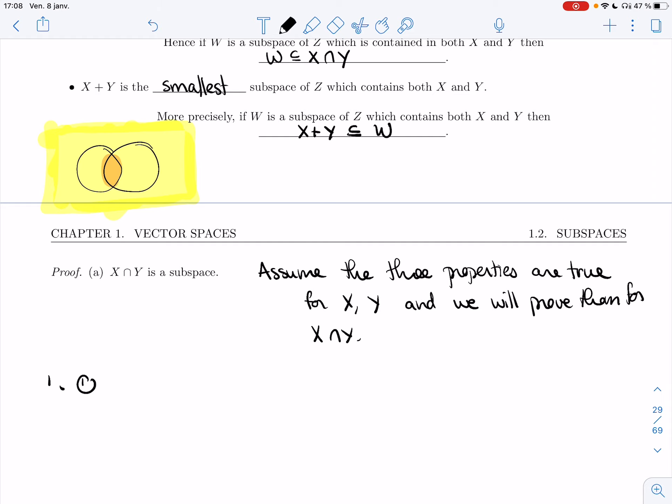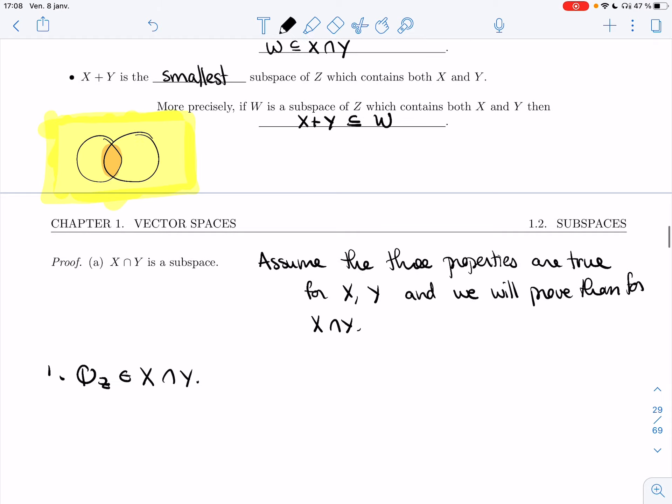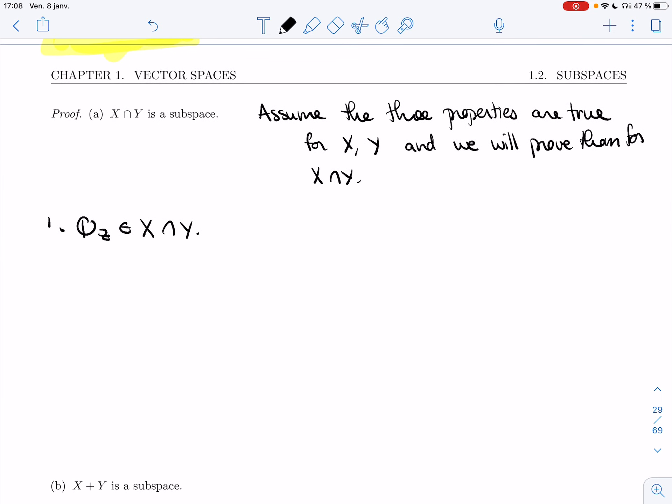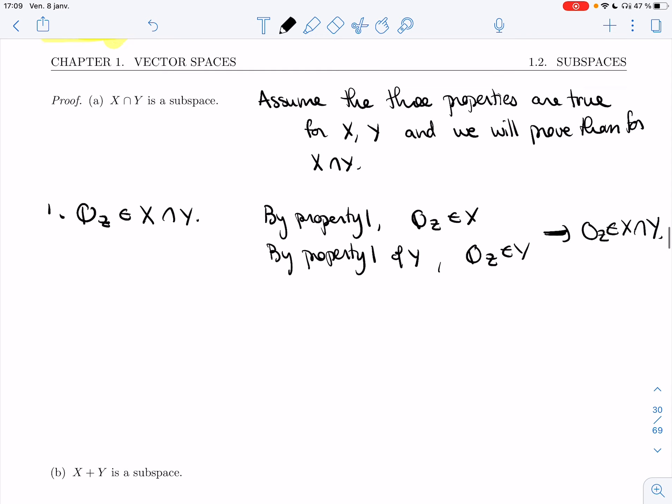Property one. We need the zero vector of Z to be inside X intersection Y. But property one is true for X, so zero_Z is in X by property one. Zero_Z is in Y by property one of Y. And so it's in both.